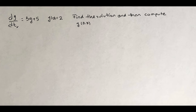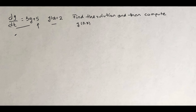Let's explain how to solve this initial value problem. This is a linear equation with a non-homogeneous part, which here is 5. The solution of this equation is y equal to the solution of the homogeneous plus the particular solution.